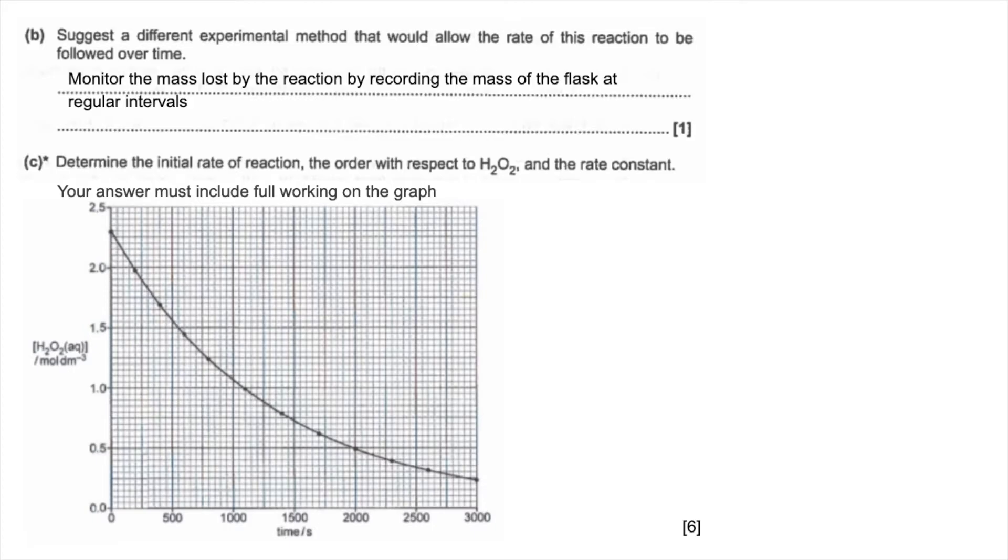So first part of C, determine the initial rate of the reaction. We do that by drawing a tangent to the curve that hits the curve at 0 seconds. We work out the gradient of that tangent, change in y divided by change in x. There is a range for the answer, so I'll give you that when I show you what I got.